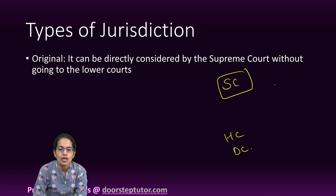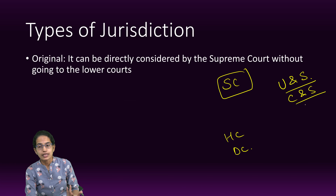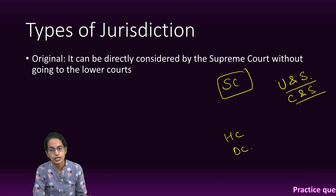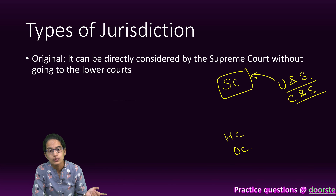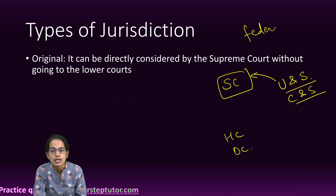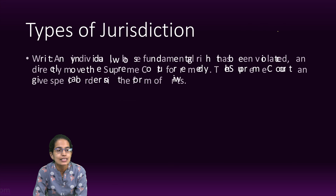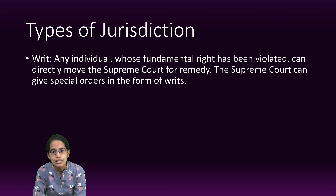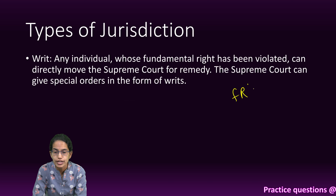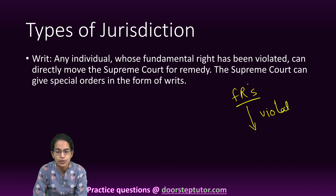The first is original jurisdiction. That means the Supreme Court can be reached directly without the intervention of the High Court, District Court, or lower courts. If there is a matter or a dispute between the Union and the Center, or the Union and the State, the person or organization can directly go to the Supreme Court. It is considered the umpire in resolution of disputes for all federal matters, and therefore we call this original jurisdiction.